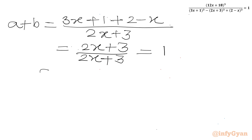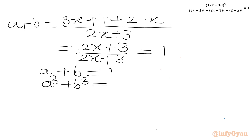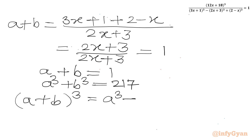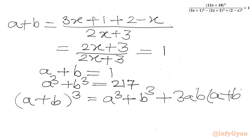So we have two equations: A plus B equal to 1, and A cube plus B cube equal to 217. Now I can use the algebraic formula: (A+B) whole cube equals A cube plus 3AB(A+B) plus B cube. Let's put in the values — A plus B is 1, so 1 cube equals 217 plus 3·AB·1.